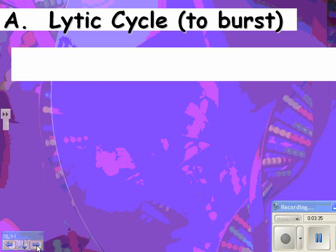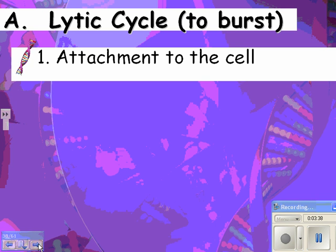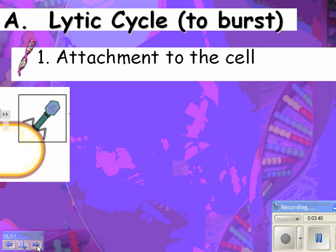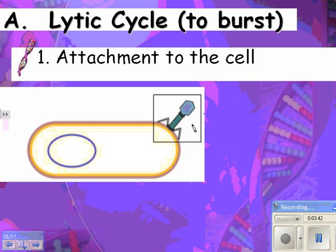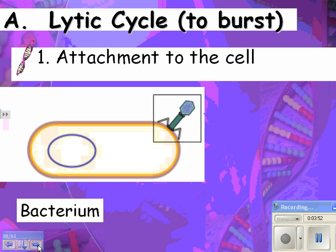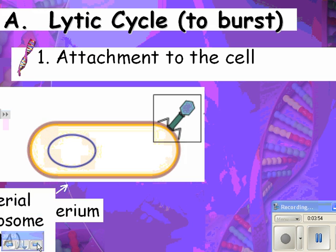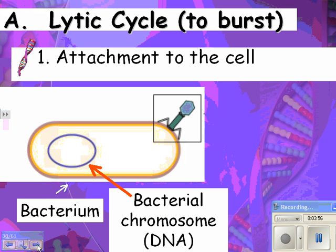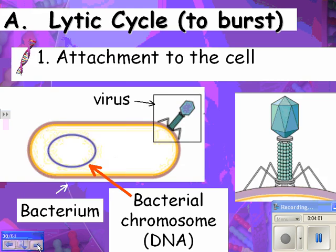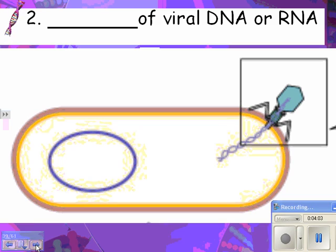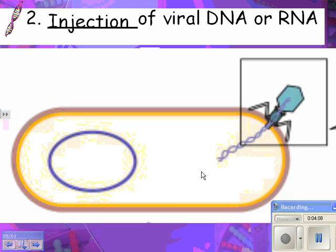First we'll look at the lytic cycle. Lysis means to burst. The first thing they do is attach to the cell — here the virus is attached to the bacterium, which has one circular chromosome. Here's the DNA that's in the virus. You can label that the bacterium, the bacterial chromosome — which means it's one DNA strand — and that's the virus. The next thing that happens is it injects the viral DNA into the host cell.